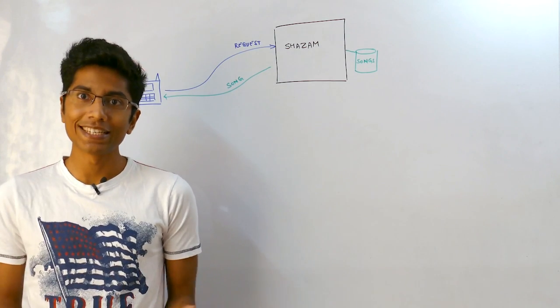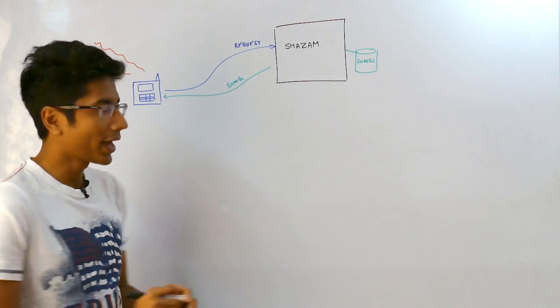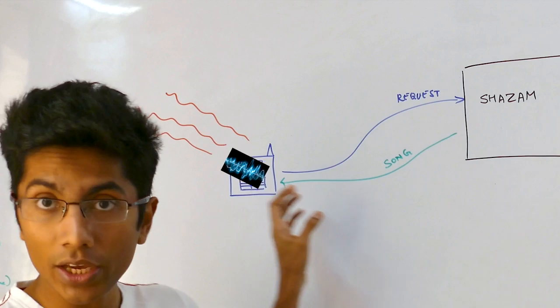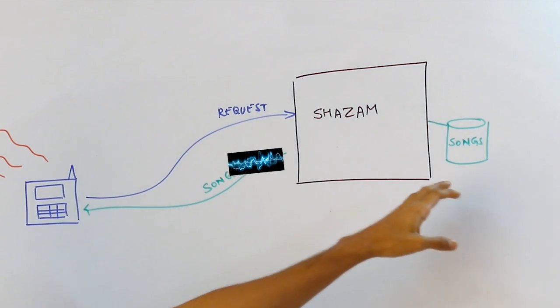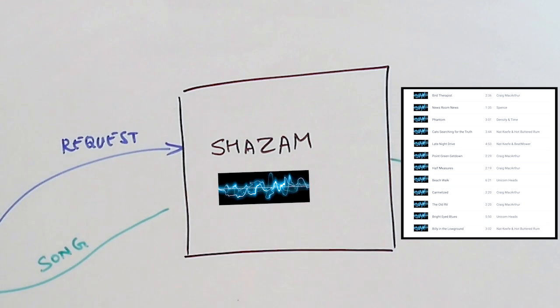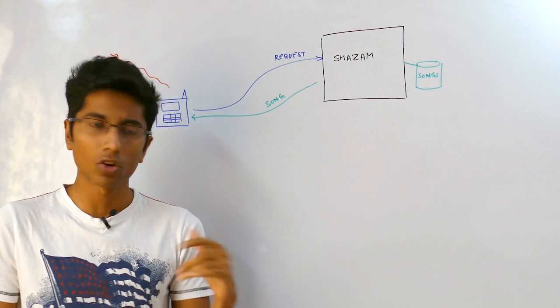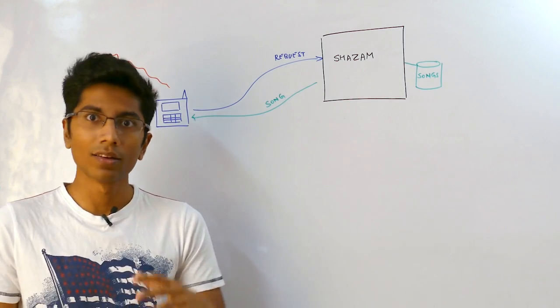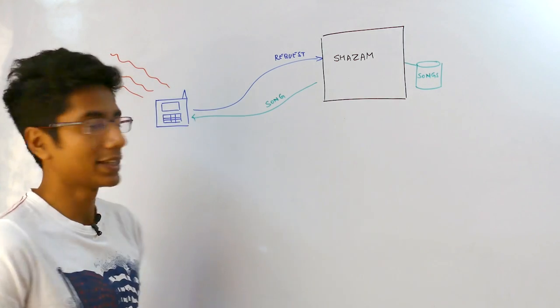In this video, we'll be talking about how Shazam is designed. Shazam is an app where users take some music and send it to the Shazam server asking what is the original song. When you're in a bar or restaurant you want to know what song is playing and that's the main use case of this app.